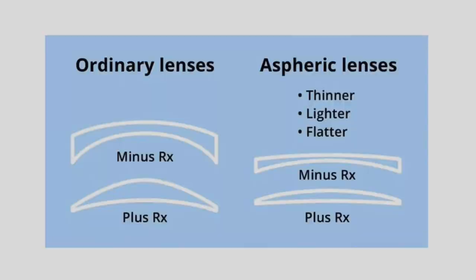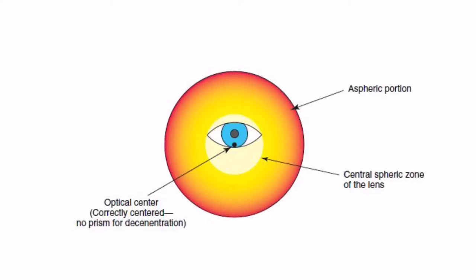This aspheric flattening produces a better lens profile and is designed to counteract peripheral aberrations or visual distortions in the lens.